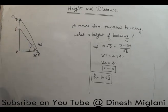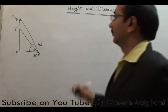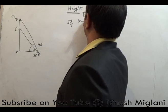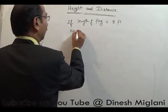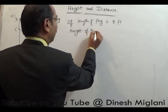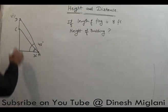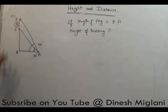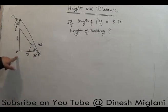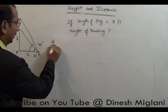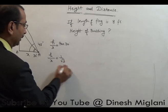There is a flag CD on top of the building. When the man looks at the top of the flag at point D, he finds the angle of elevation to be 45 degrees. The length of the flag CD is 8 feet, and we have to find the height of the building BC. In triangle ABC: H upon X equals tangent 30, which is 1 upon root 3.